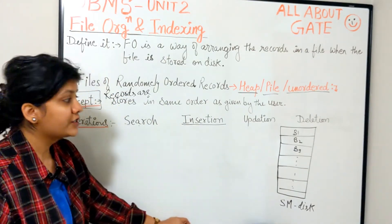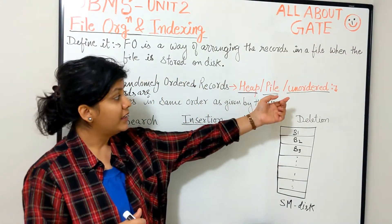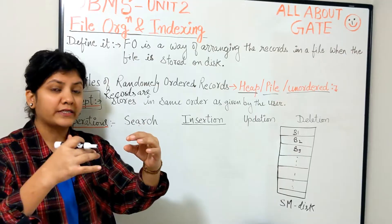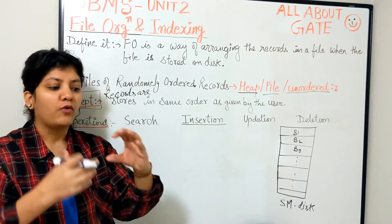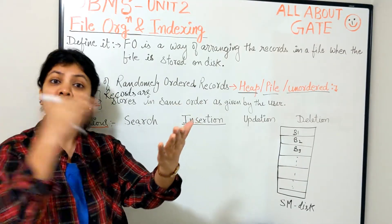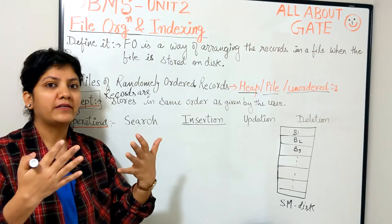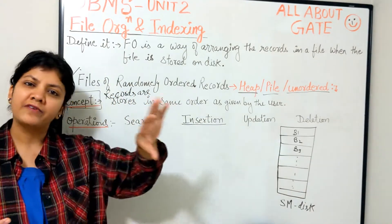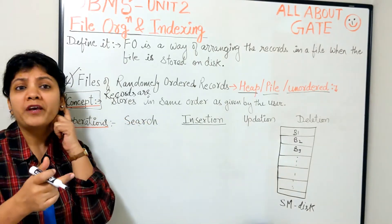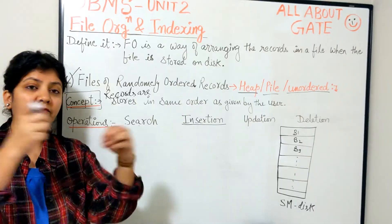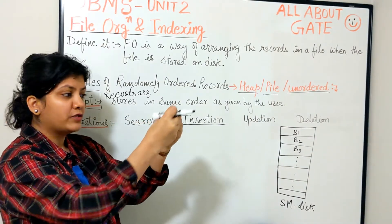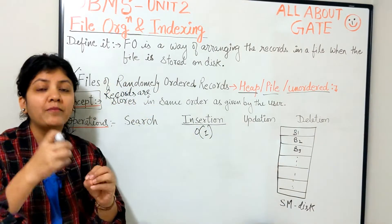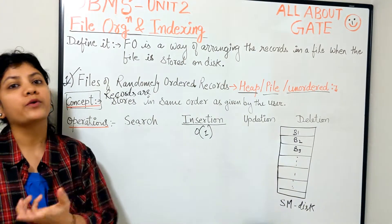The very first operation we take up for this organization is insertion, because we know we are inserting in no particular order. Suppose you already have many records in the file and a new record is coming to be inserted — what is the number of blocks you have to access in order to store it? Nothing — it's just that the location of the last record is stored in the file header. The system will know the next empty place and put the record there. So insertion takes O(1) — minimum time, just come and insert.